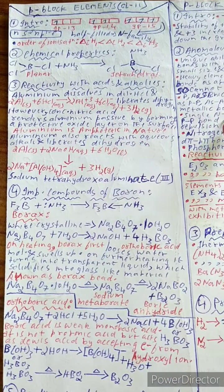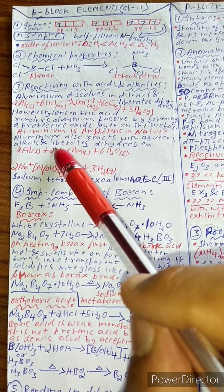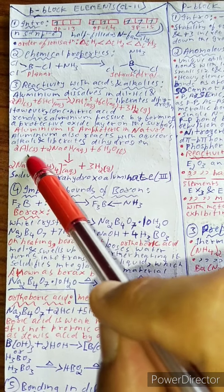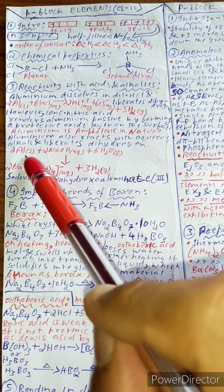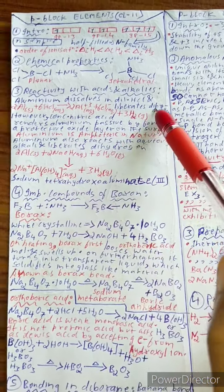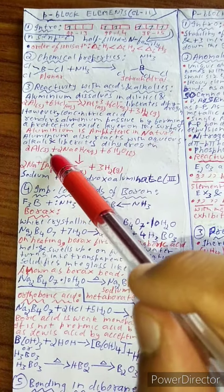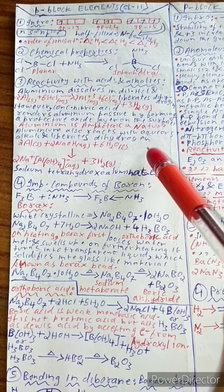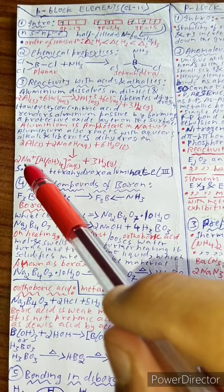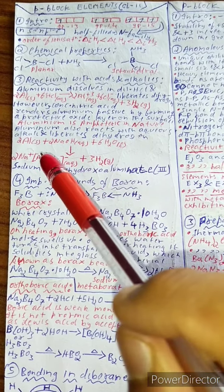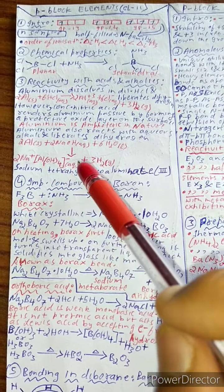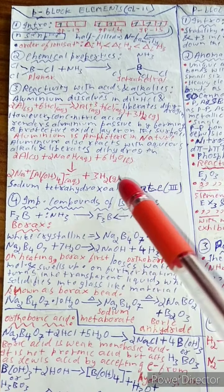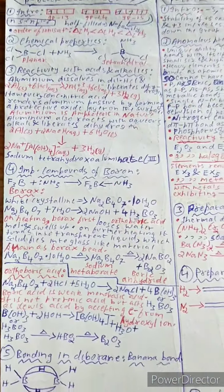Aluminium also reacts with aqueous alkali and liberates dihydrogen. The reaction is: 2Al(s) + 2NaOH(aq) + 6H₂O(l) → 2Na⁺[Al(OH)₄]⁻(aq) + 3H₂(g), forming sodium tetrahydroxoaluminate.